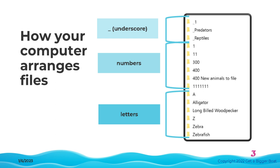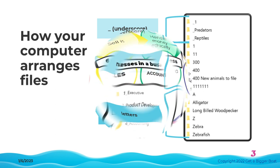Now that you know how the file system sorts files, you can use this knowledge to arrange your files and folders in a way that makes sense for you. You can push important folders to the top of the list by putting an underscore in front of them. You can push less important files to the bottom by starting them with a Z.